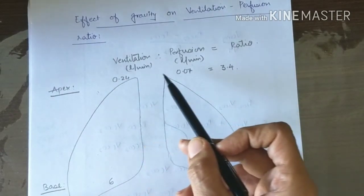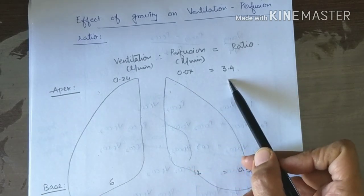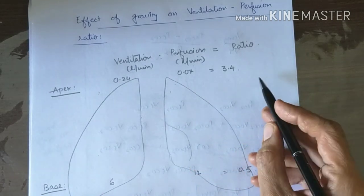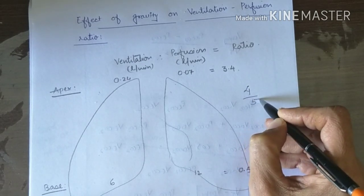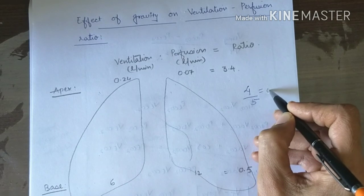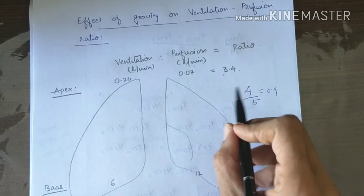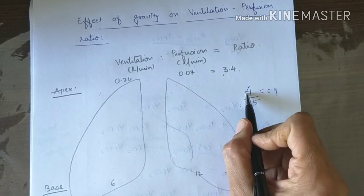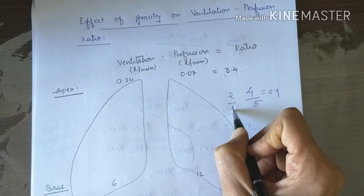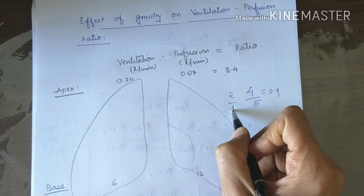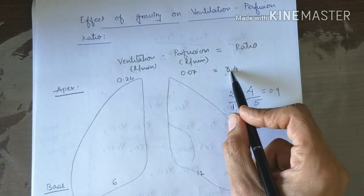In apical alveoli, both ventilation and perfusion are reduced. For example, if normal ventilation is 4 liters and perfusion is 5 liters, the ratio is about 0.9. In apical alveoli, ventilation may decrease from 4 to 2 and perfusion becomes 1, since gravity has more effect on perfusion. Therefore the ratio increases — for example, 2 divided by 1 equals 2.